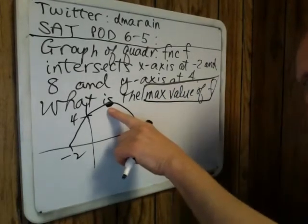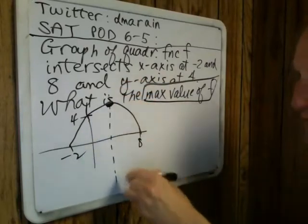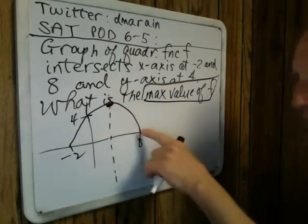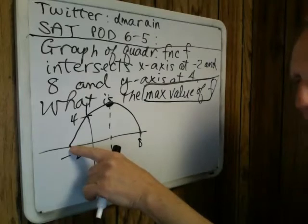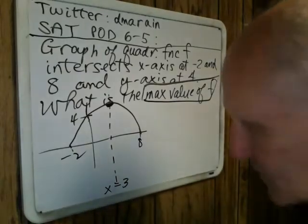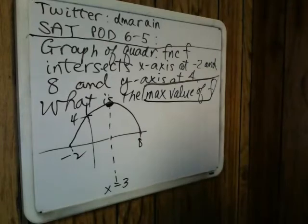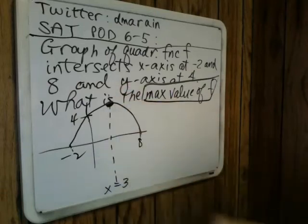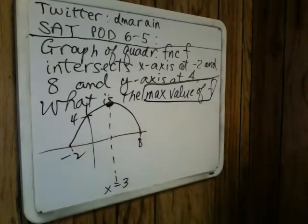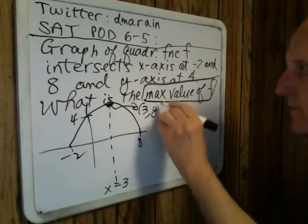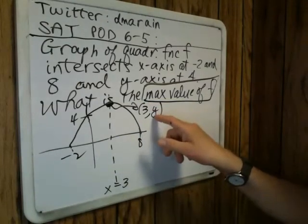This point — the vertex — has two coordinates, of course. I'm going to draw the axis of symmetry. The x-coordinate of the axis of symmetry would be the mean of 8 and negative 2, which is 3. That is your axis of symmetry: x equals 3. Symmetry implies that the x-coordinate of the vertex is the average of the two x-intercepts. So now we know this point here is (3, something), and that's what we're being asked to find — the something, the maximum value.